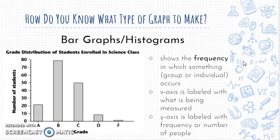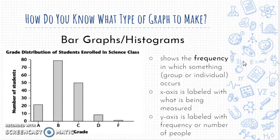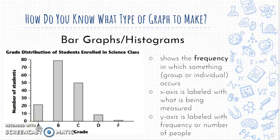Knowing which type of graph to make is important — I often see people use a line graph when they should use a bar graph, or vice versa. Use a bar graph when showing frequency — how often something occurs — or when comparing different groups or individuals. On a bar graph or histogram, the x-axis is labeled with what's being measured and the y-axis shows how frequently it occurs. A histogram is very similar but each bar represents a range rather than an individual group.